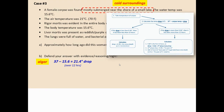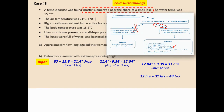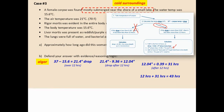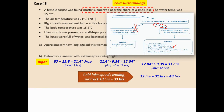For algor mortis: 37 minus 15.6 equals a 21.4 degree drop — larger than 9.36 — so we follow the second part of the flowchart. In the first 12 hours it dropped 9.36 degrees; the remaining drop is 21.4 minus 9.36, which is 12.04 degrees. Then 12.04 divided by 0.39 equals 31 hours after the first 12 hours. Total estimate: 12 plus 31 equals 43 hours.